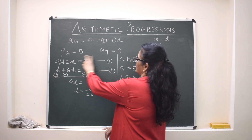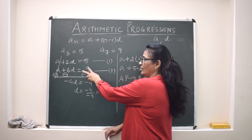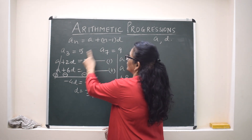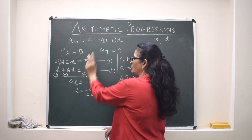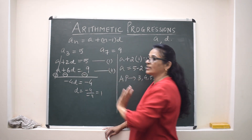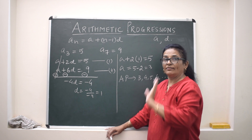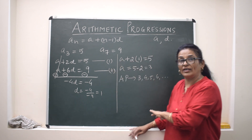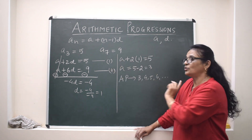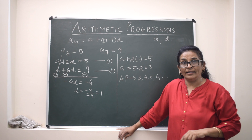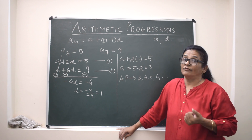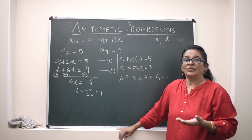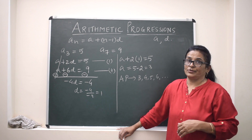So when two terms are given, we write the formula according to the nth term, which gives us D. We substitute D to get A, and once we know A and D we can form the AP. We will see other questions similarly.